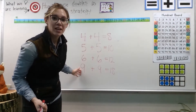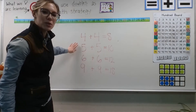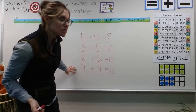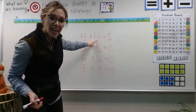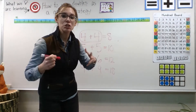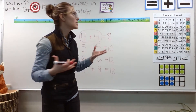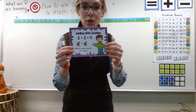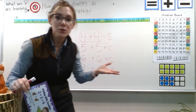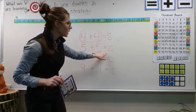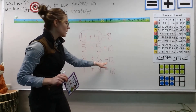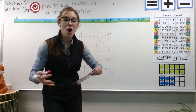Now let's take a look at all of those double 10 frames we looked at. What do you notice about these number sentences? You're right — in each one of the number sentences, we have a number plus itself. This is what we call doubles. Whenever you take a number and add the number to itself, it's a double. So we're going to add this to our math strategy wall: two plus two equals four, five plus five equals 10, six plus six equals 12, nine plus nine — those are doubles.